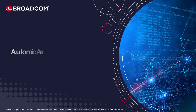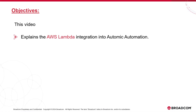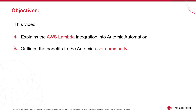Welcome to this video on the Atomic Automation AWS Lambda integration solution. We will explain the AWS Lambda integration and what it brings to the Atomic user community. AWS Lambda is a serverless, event-driven compute service that allows you to run code for almost any type of application or backend service without provisioning or managing any servers. You can trigger Lambda from over 200 AWS services and SaaS applications, and only pay for what you use.